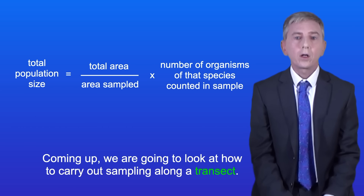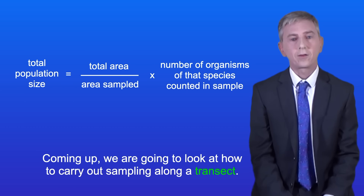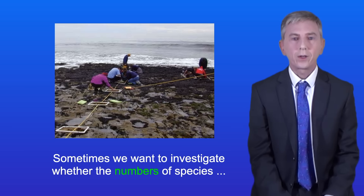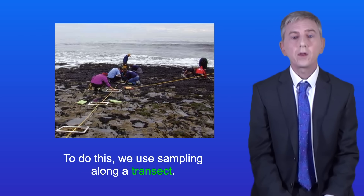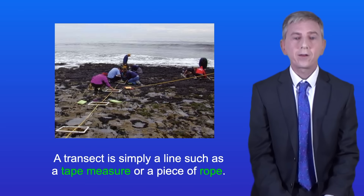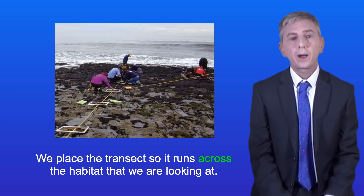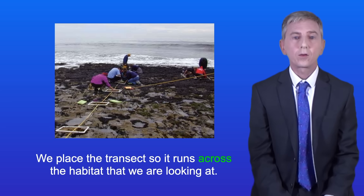Coming up we're going to look at how to carry out sampling along a transect. Sometimes we want to investigate whether the numbers of species change as we move across a habitat, and to do this we use sampling along a transect. A transect is simply a line such as a tape measure or a piece of rope, and we place the transect so it runs across the habitat that we're looking at.